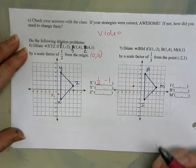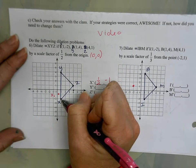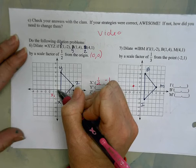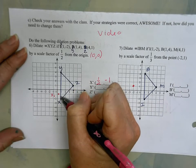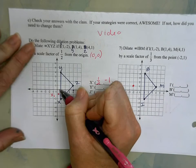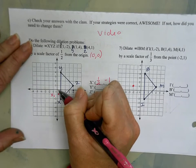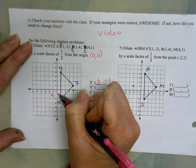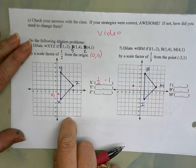But the other thing that we could do is we could say, okay, well how far is X from the origin? Well, to get there I'd go over 1 and down 2. If I cut that in half, I'm gonna go over 1/2 and down 1. So the strategy that we're gonna use in the second one we could also apply here if we wanted.